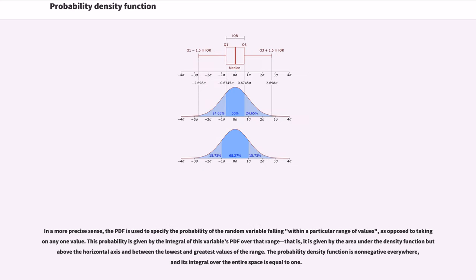In a more precise sense, the PDF is used to specify the probability of the random variable falling within a particular range of values, as opposed to taking on any one value. This probability is given by the integral of this variable's PDF over that range — that is, it is given by the area under the density function viewed above the horizontal axis and between the lowest and greatest values of the range. The probability density function is non-negative everywhere, and its integral over the entire space is equal to 1.